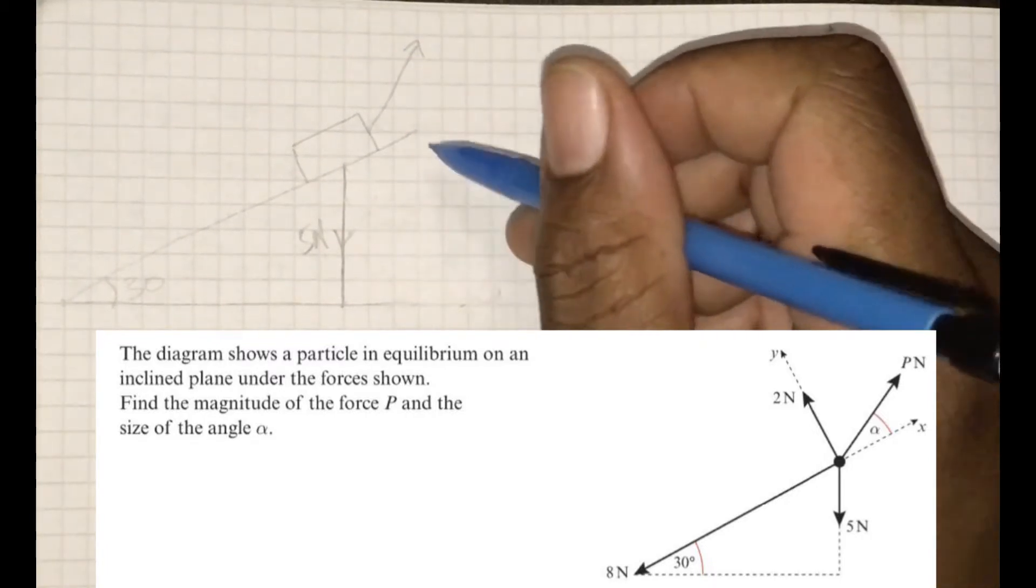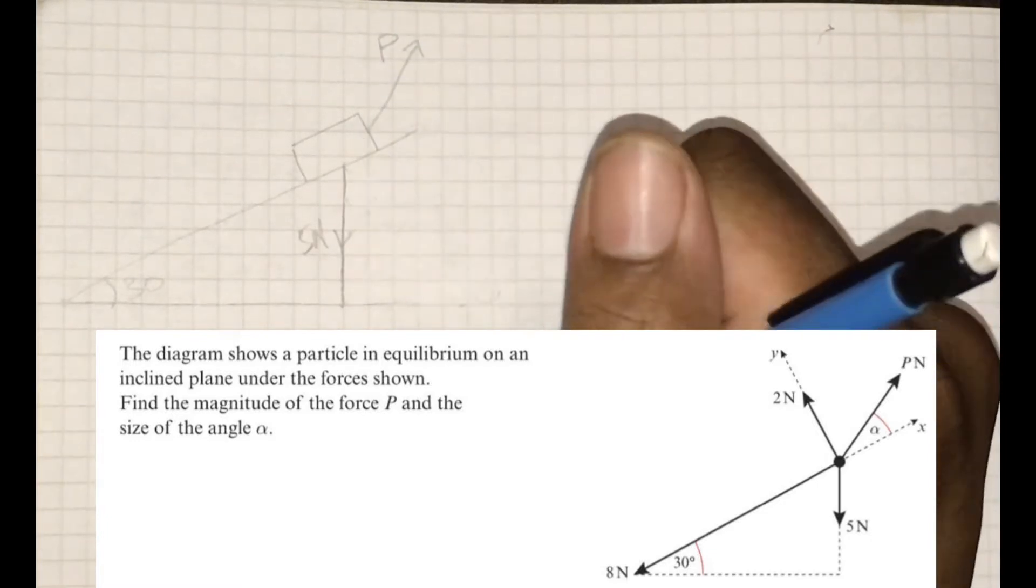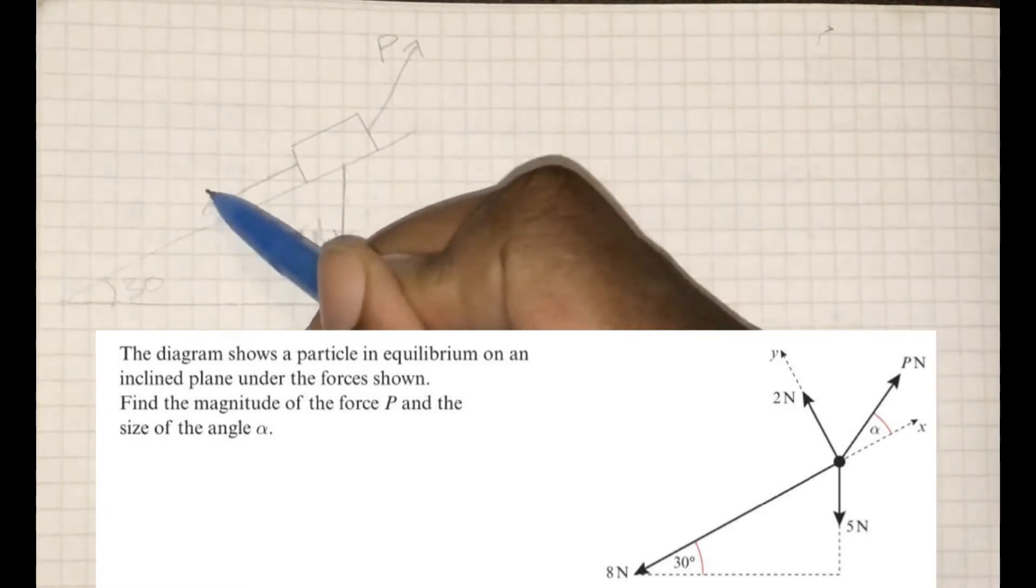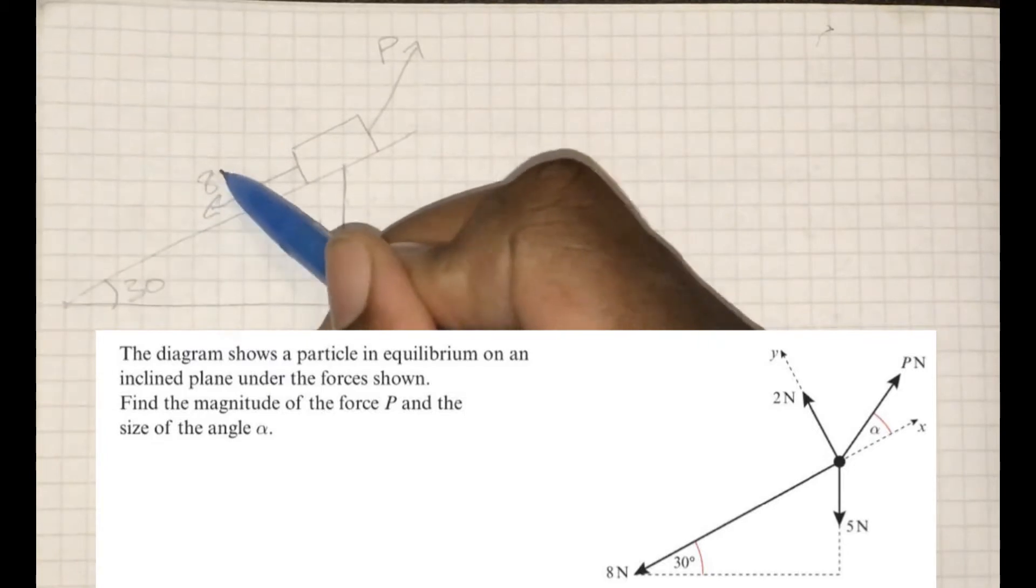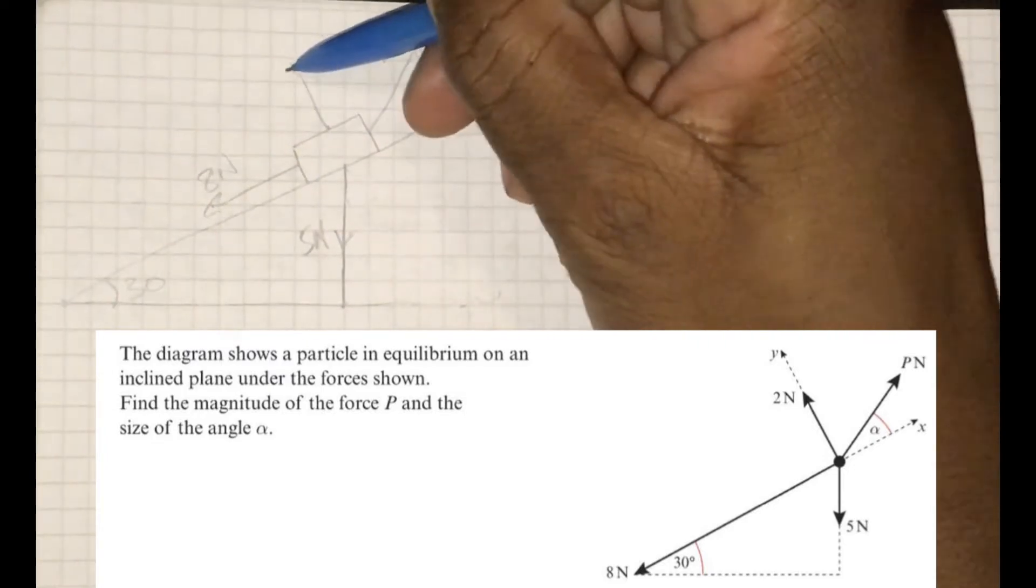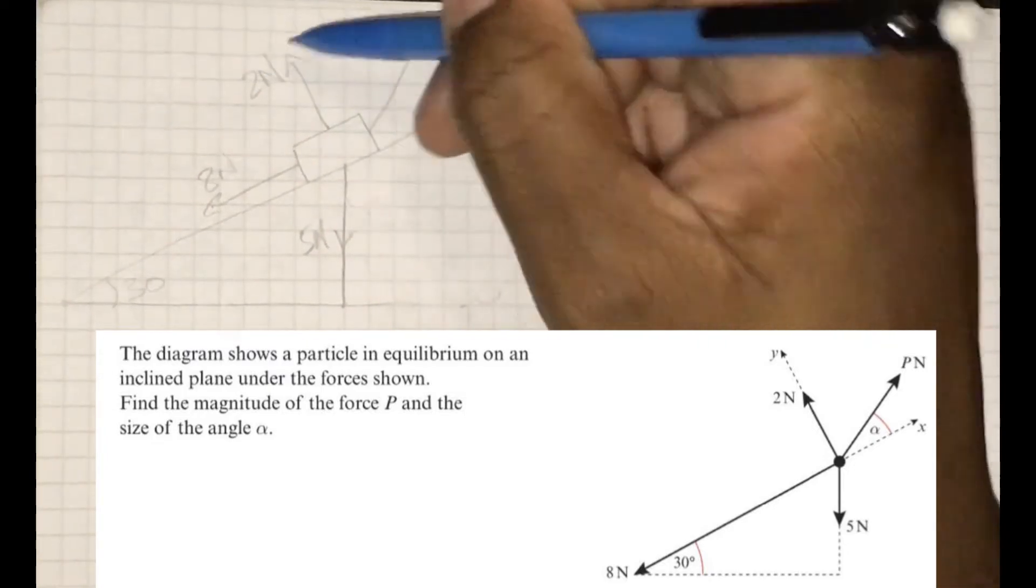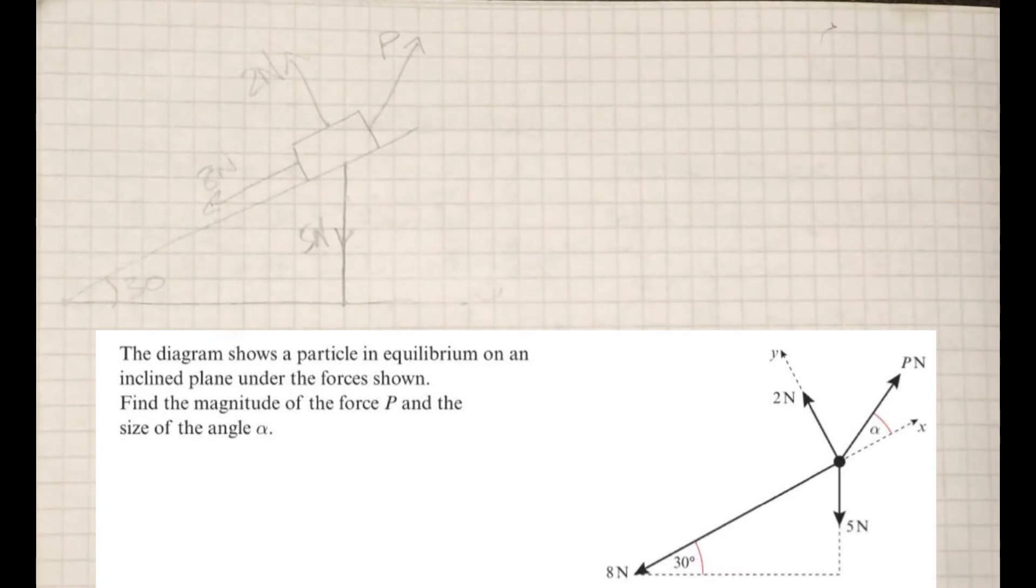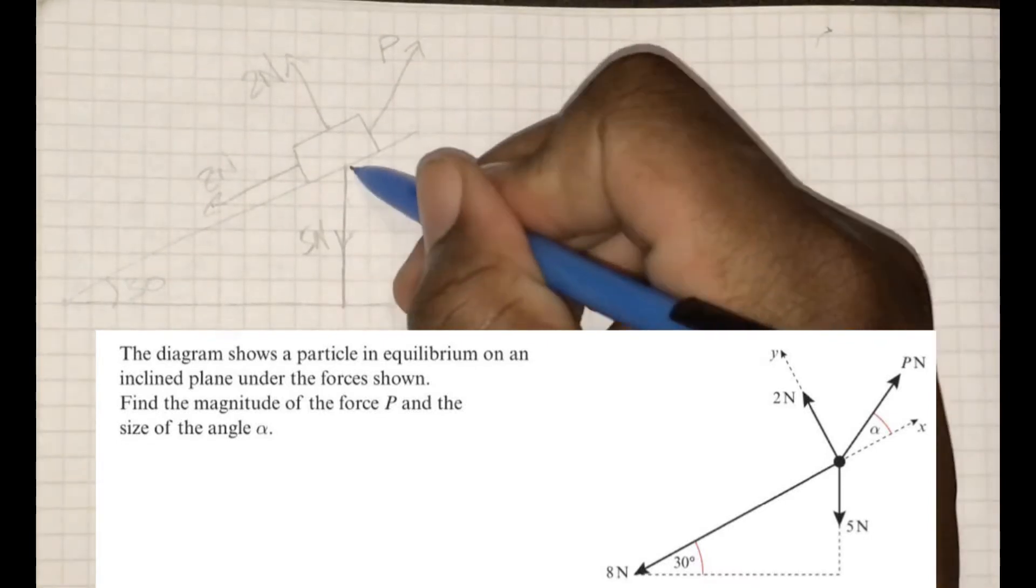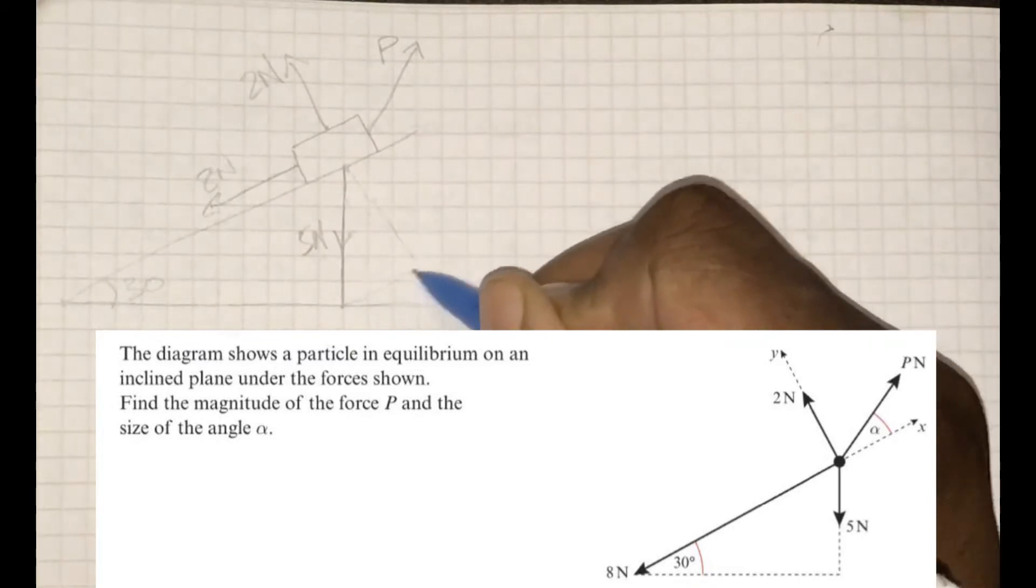I'm going to start by producing my own diagram and copying down the forces given. So five Newtons as the weight, I've got the diagonal P, I've got eight Newtons going down the slope, and I've got two Newtons perpendicular to the slope.